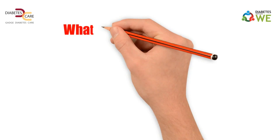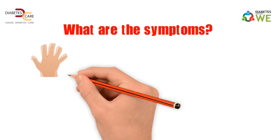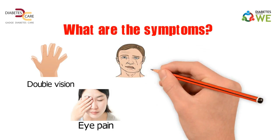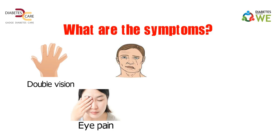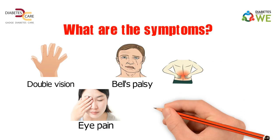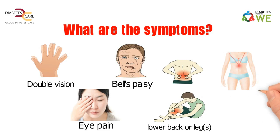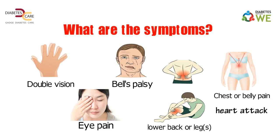What are the symptoms? Double vision, eye pain, paralysis on one side of the face, Bell's palsy, severe pain in a certain area such as the lower back or legs, or chest and belly pain that is sometimes mistaken for another condition such as a heart attack or appendicitis.